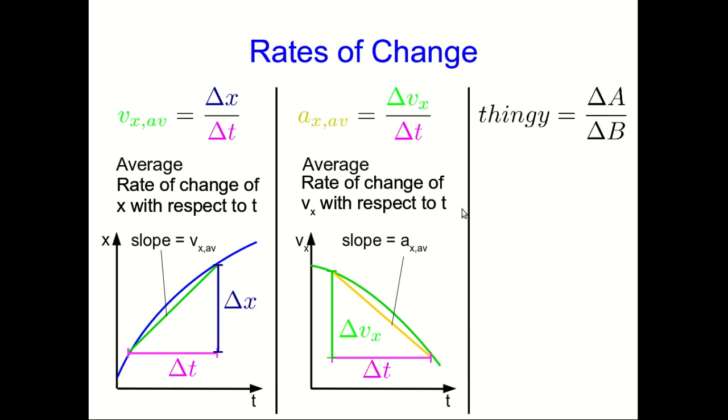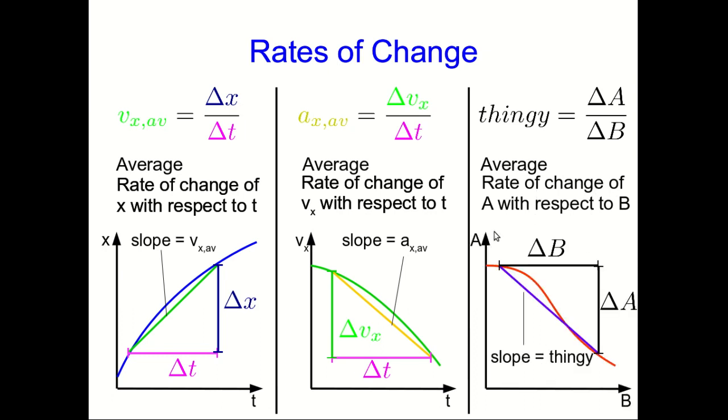Well, if you have any old relationship, some variable thingy, which is some delta a over delta b. I don't know what a and b are. Whatever they are, thingy is the ratio of their changes. Then thingy must be an average rate of change of a with respect to b. And if you graph a versus b, the slope of a line connecting two points on that graph must be thingy.